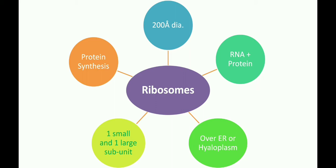What is hyaloplasm? It is a clear fluid portion of the cytoplasm which contains water, minerals, ions, amino acids, sugars, etc. Hyaloplasm and cytoplasm are two different components — hyaloplasm is a component of cytoplasm.